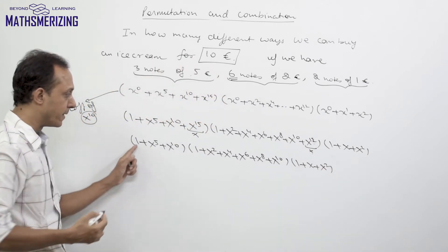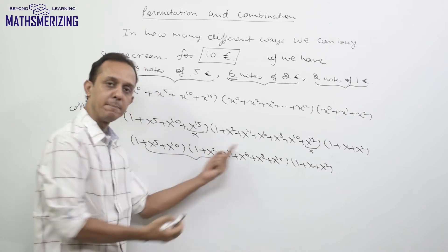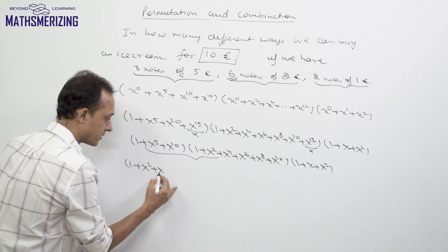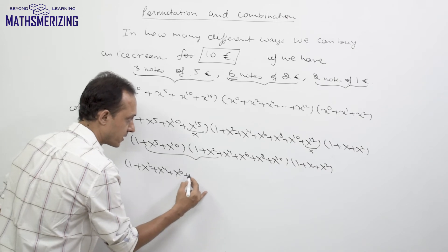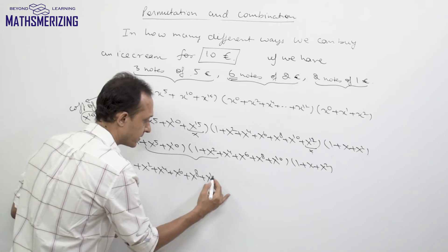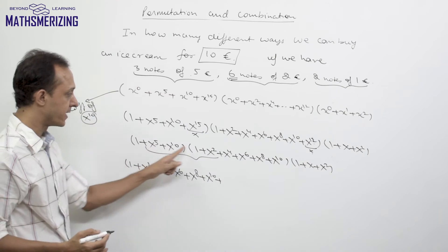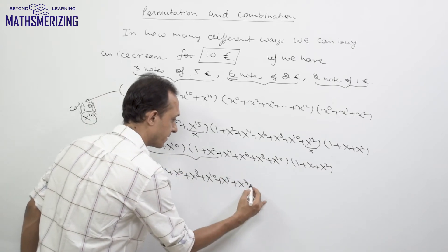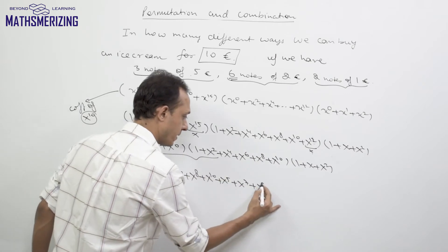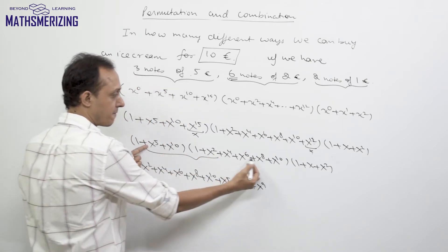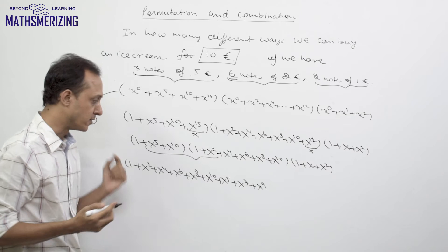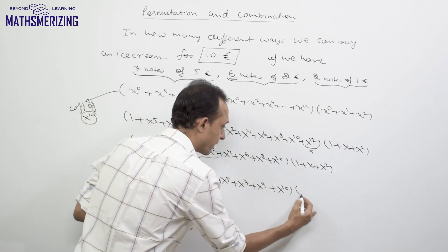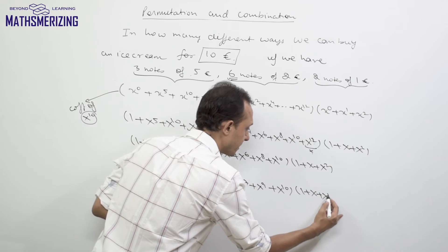Now I start multiplying the first two series. Multiplying (1 + x^5 + x^10) by (1 + x^2 + x^4 + x^6 + x^8 + x^10): the '1' term gives 1 + x^2 + x^4 + x^6 + x^8 + x^10. Multiplying by x^5 gives x^5 + x^7 + x^9, and after that the powers exceed 10 so I discard them. Multiplying by x^10 gives only x^10, contributing 1·x^10.